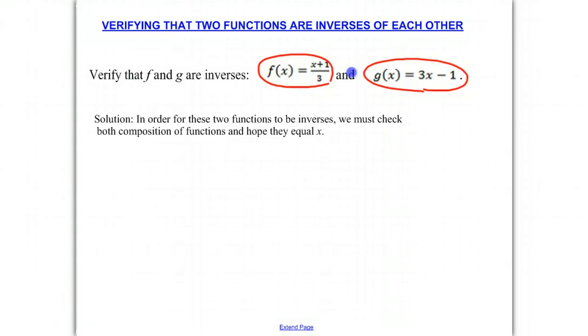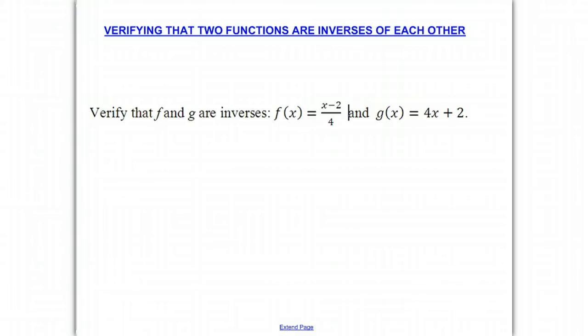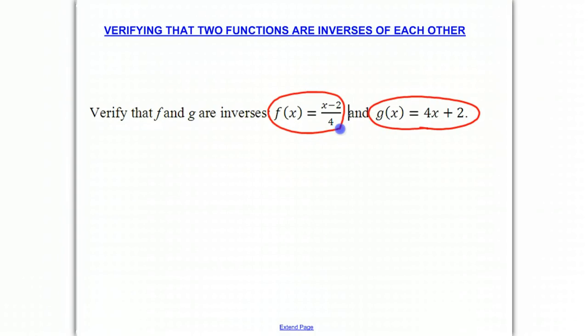We're going to give you a problem to do on your own as we work through ours, and periodically we'll stop the screencast and ask you to do the next step. The problem we're giving you is: write down f of x equals x minus 2 over 4, and g of x equals 4x plus 2. Then periodically we'll stop and ask you to do the next few steps to verify that these two functions are inverses. Please pause right now and write these two functions down.